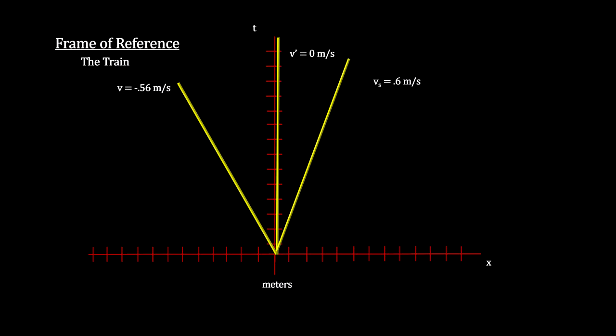This turns it into the space-time graph for the train's frame of reference. Here we see that the ground is moving backwards at 0.56 meters per second, and the person on the train is moving at 0.6 meters per second.